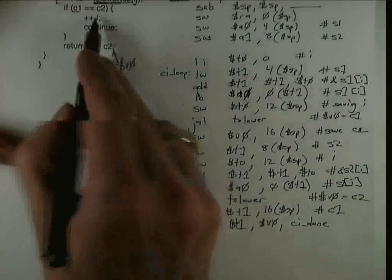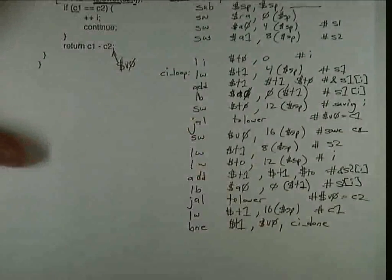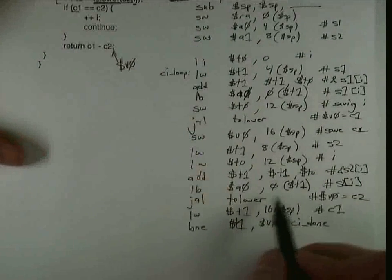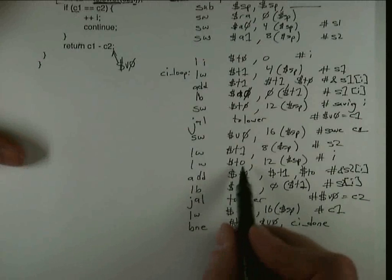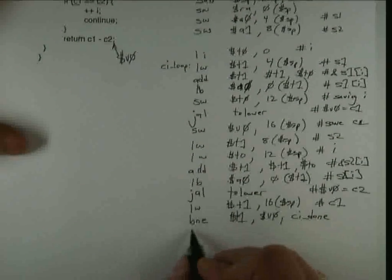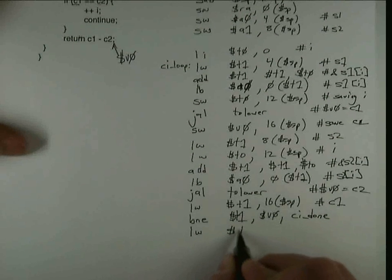So now I'm in this special case. I want to increment I. Again, since this jump and link killed T0, I have to load it off the stack again. So I'm going to do a load word into T0.